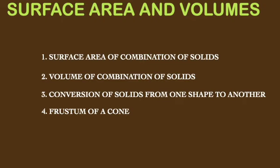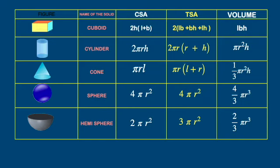I already solved some problems of exercise 15.1 and 15.2. Before solving further problems, it is better to recall the formulas for different solids shown in this chart: cuboid, cylinder, cone, sphere, and hemisphere. For today's class on volume, the key formulas are: volume of a cuboid = Lbh; cylinder = πr²h; cone = (1/3)πr²h; sphere = (4/3)πr³; hemisphere = (2/3)πr³.